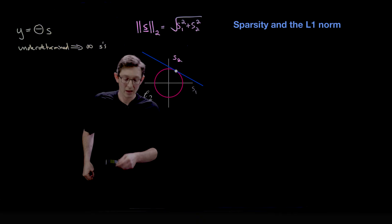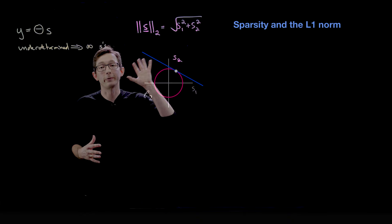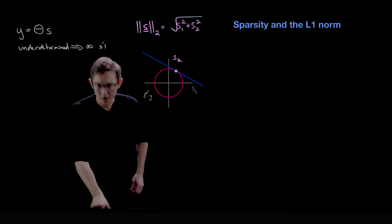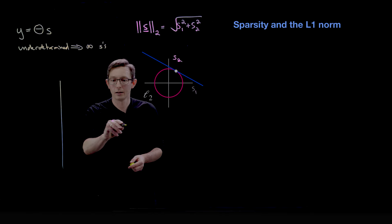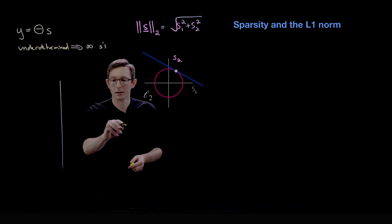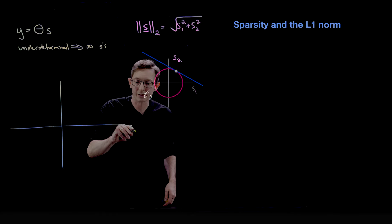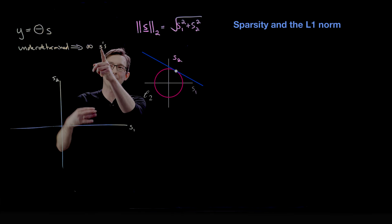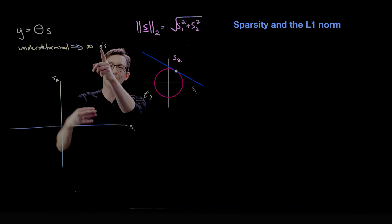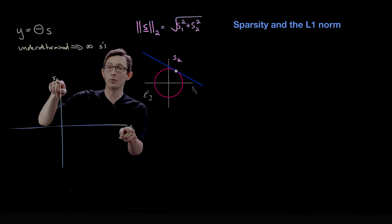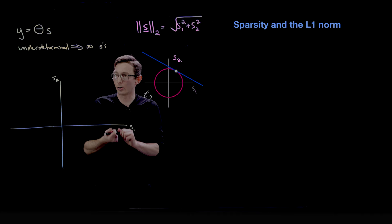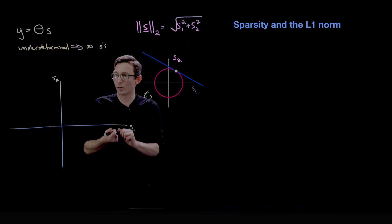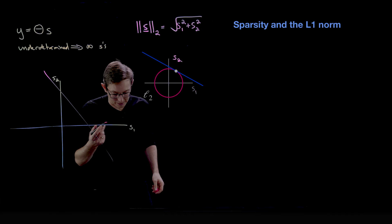I'm going to walk you through the two-norm solution geometrically, and then we'll look at why the one-norm is so good for promoting sparse solutions. We'll have our two coordinates s1 and s2. For the system y = θs, if we have literally two unknowns s1 and s2 and only one measurement y1, that would define a line in s1-s2 space.